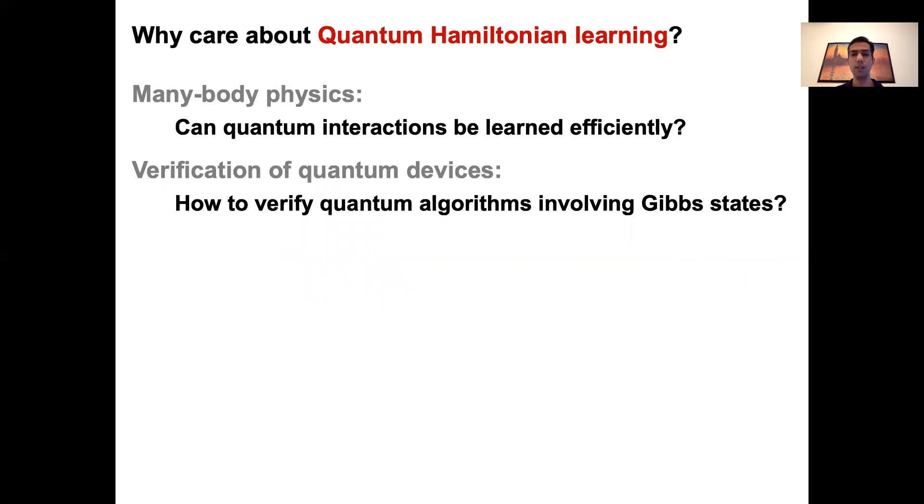Okay, so that's one motivation. Another reason we care about this problem is in the context of the verification of quantum computers. An important subroutine in various quantum algorithms is preparing and sampling from quantum Gibbs states. This is, for instance, used in quantum SAT solvers or quantum annealing. So, to verify whether a quantum computer is implementing these algorithms faithfully or not, we want classical algorithms that, given samples from the output of a quantum computer, learns the implemented Gibbs state.